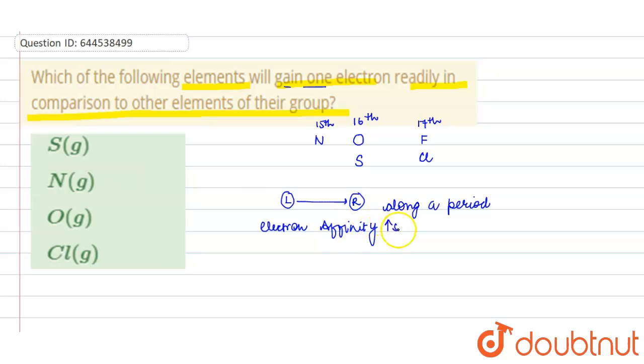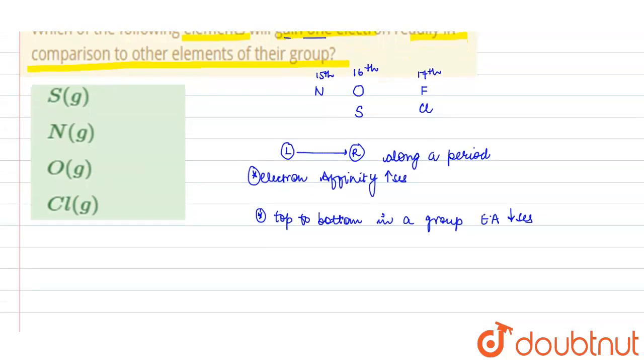And if we talk about moving from top to bottom, top to bottom in a group, in a group, electron affinity decreases because size increases, electron affinity decreases.